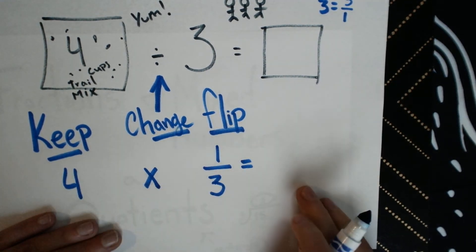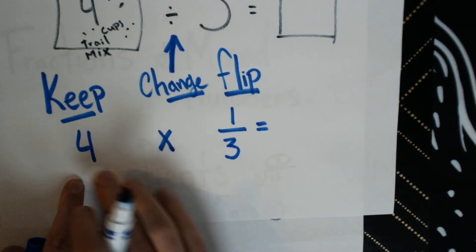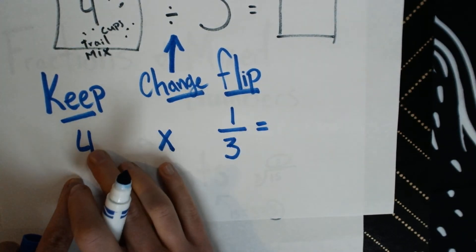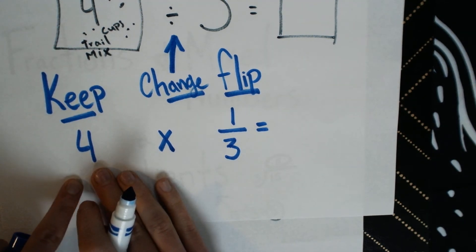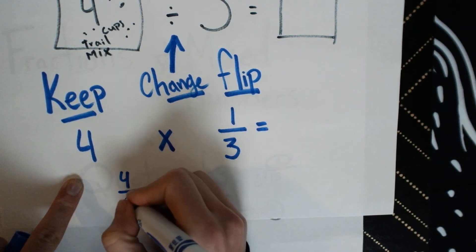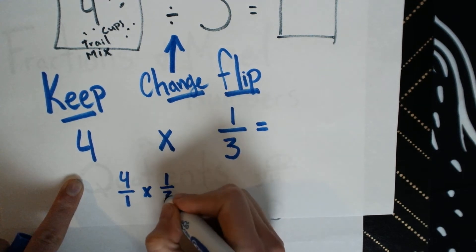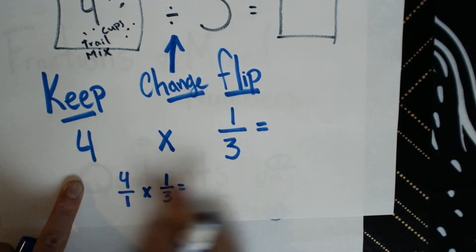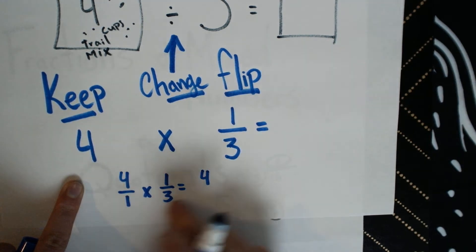And now we're ready to go straight across. We know that when we multiply our fractions, and when you have a whole number, whole numbers stay the same and keep their value if you just put them over 1. This would truly be 4 over 1 times 1 over 3. And let's multiply straight across. 4 times 1 is 4. 3 times 1 is 3.